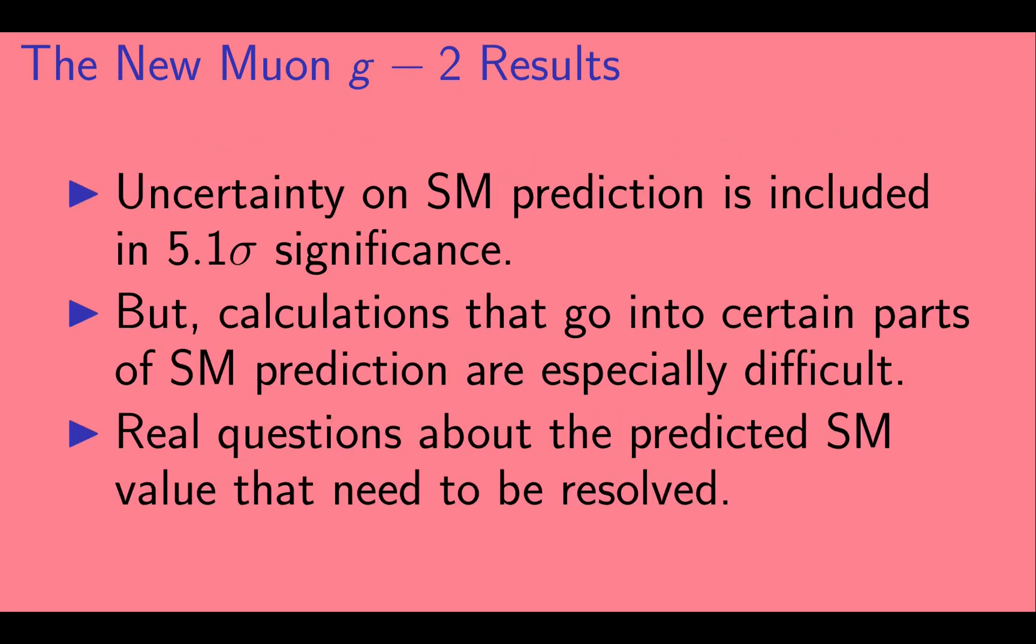Now, this uncertainty on the standard model prediction is included in the 5.1 sigma significance that we just mentioned. But calculations that go into certain parts of the standard model prediction are especially difficult. And there are real questions about the SM value that need to be resolved.